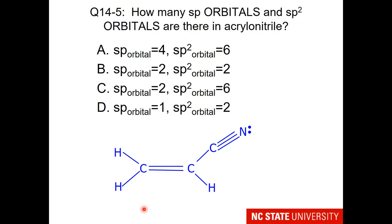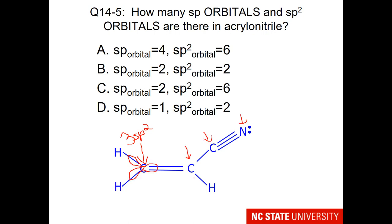The next question asks how many sp orbitals and sp2 orbitals are there in acrylonitrile. If this carbon is sp2 hybridized, remember that involves three sp2 orbitals. So do the same for each remaining carbon and nitrogen.